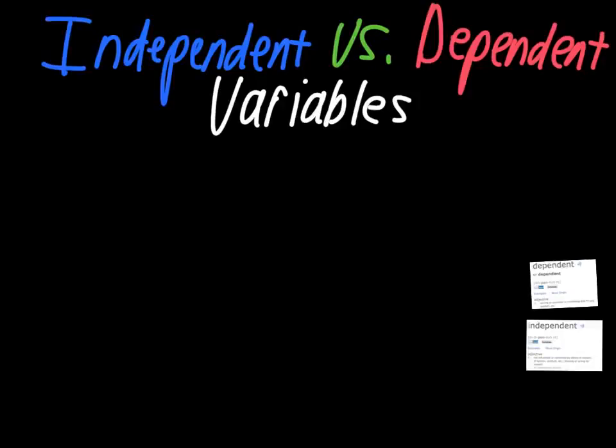The purpose of this video is to explain the difference between independent and dependent variables. We talked about this a little bit when we were going through the different steps of the scientific method. We said that there are independent and dependent variables involved in developing a hypothesis. Most of the time, that's when you're going to see this — when you're talking about the hypothesis step of establishing your own experiment or interpreting someone else's. The easiest way to break these down is to talk about what these two words mean.